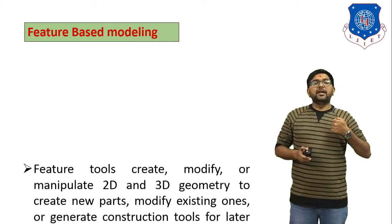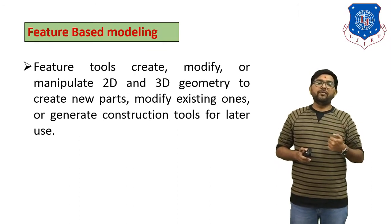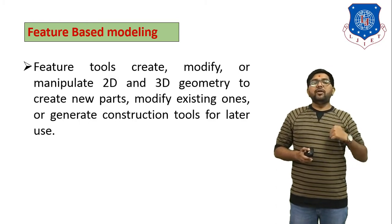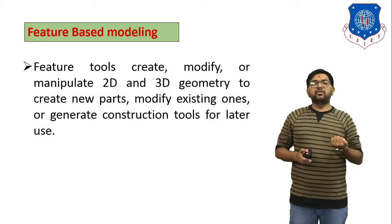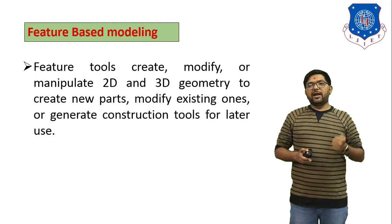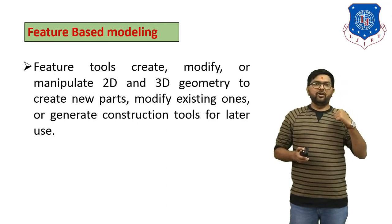In feature-based modeling we will discuss a number of operations or features one by one. Feature tools create, modify, or manipulate 2D and 3D geometry to create new parts, modify existing ones, or generate a construction tool for later use. So using feature-based modeling you can either modify a 3D object or generate a new 3D object.